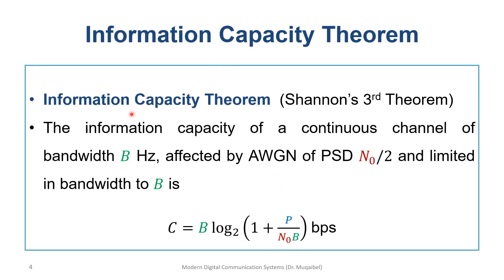Now we can state the information capacity theorem, also known as Shannon's third theorem. The information capacity of a continuous channel of bandwidth B hertz, affected by additive white Gaussian noise with power spectral density N₀/2 and limited in bandwidth to B, is given by this formula. Please pause and write down the three Shannon theorems: source coding theorem, channel coding theorem, and channel capacity theorem.